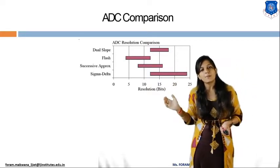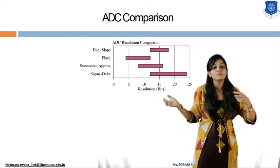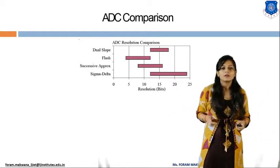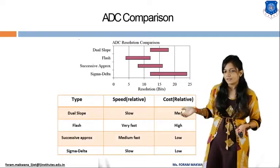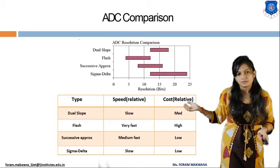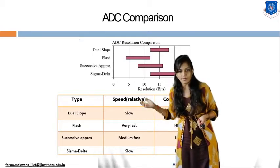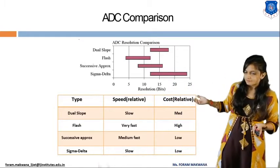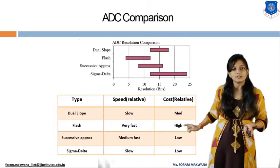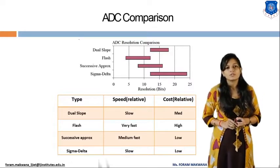This is the comparison of four types of ADC in terms of resolution — that is, how we convert an analog signal into a number of bits. Higher resolution means lower error. Comparing these four ADCs in terms of speed and cost: the flash type ADC is the fastest but also the most expensive of the four.